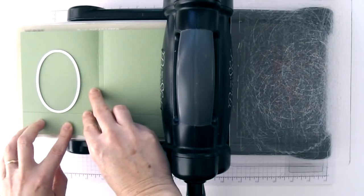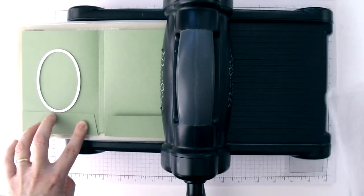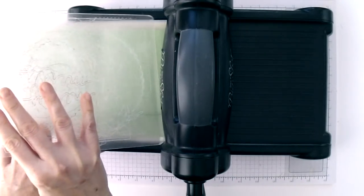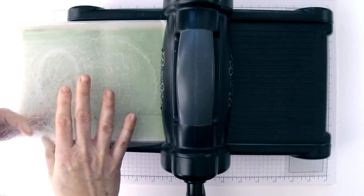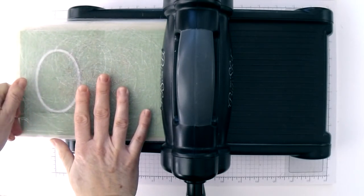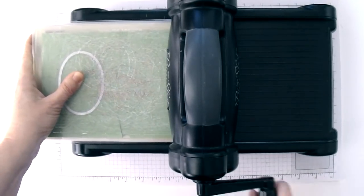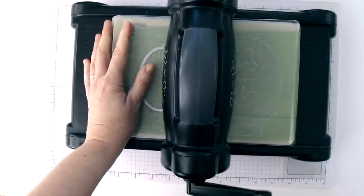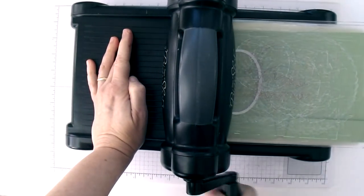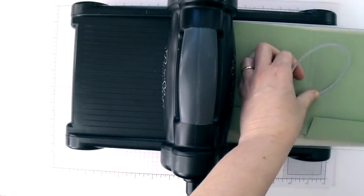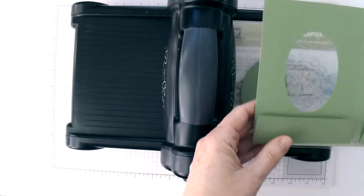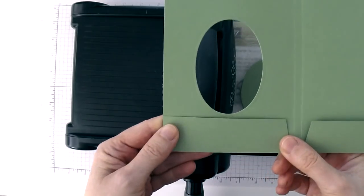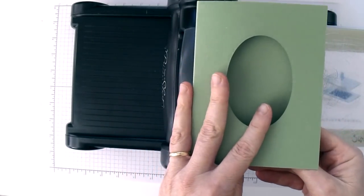I'm going to put this centered and just above this folded piece and that should create an oval window that is centered on the front. Then I'm just going to put my second cutting plate on top being careful not to shift the oval down below and then we're going to run this through the Big Shot. And here you go, you've got yourself a window on the front of your card holder.